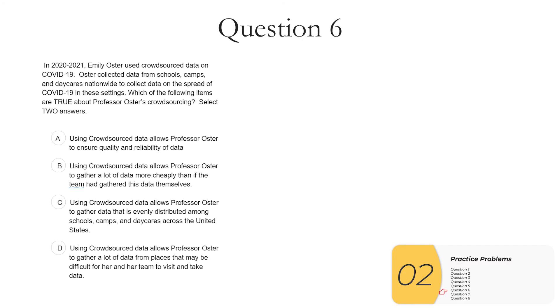Question six, this is a crowdsourcing in citizen science question and we need to select which of the items are true. Select two. Remember on the exam, you'll have a few that say select two. A, crowdsourcing allows Professor Oster to ensure quality and reliability of data. This is definitely not true. Remember, sometimes crowdsourced data can be sketchy data.